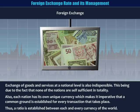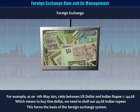Foreign exchange. At the grassroot level, commodities and services are exchanged via a common medium, namely money. In a similar fashion, exchange of goods and services at a national level is also indispensable. This is due to the fact that none of the nations are self-sufficient in totality. Also, each nation has its own unique currency, which makes it imperative that a common ground is established for every transaction. Thus a ratio is established between each and every currency of the world. For example, as on the 11th of May 2011, the ratio between the US dollar and the Indian rupee was 1 to 44.68, which means to buy one dollar we need to shell out 44.68 Indian rupees. This forms the basis of the foreign exchange system.